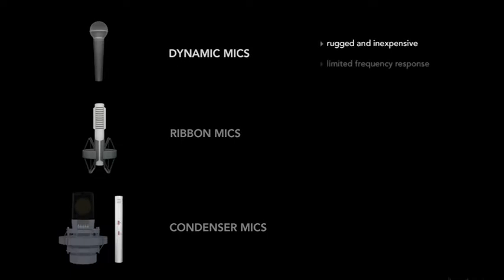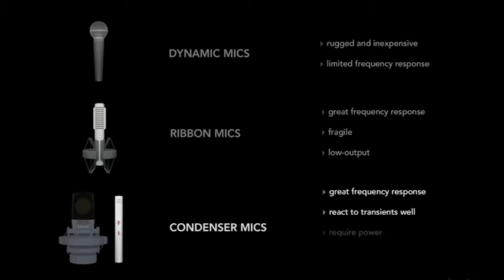Dynamic mics are rugged and inexpensive but have a limited frequency response. Ribbon mics have a great frequency response but are fragile and have a low output. Condenser mics have a great frequency response, react to transients well, require power, and are affected by humidity and temperature.